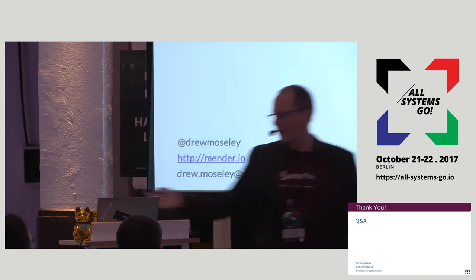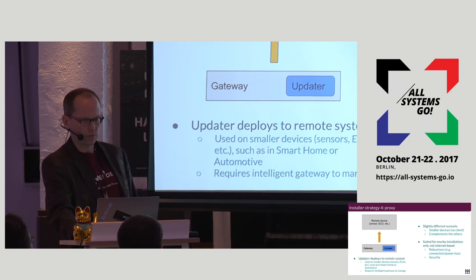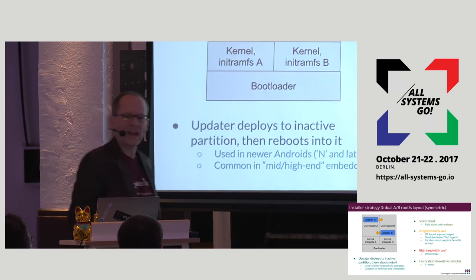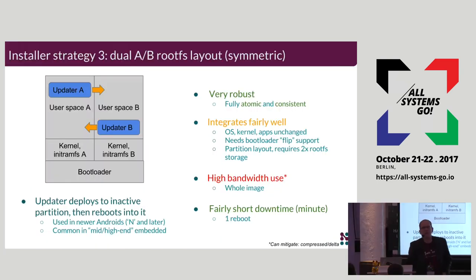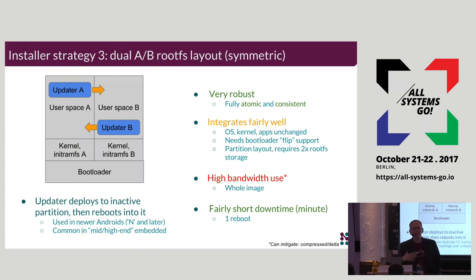The question is about the asterisk next to the high bandwidth use on the slide — can that be mitigated with things like delta updates? And absolutely it can. That's a feature we are working on in our project specifically. Everybody we talk to, that's one of the first questions they ask, so we definitely want that feature out quickly. Leonard has given a talk on CA sync, which is one of the options we're considering. There are quite a few options out there and it's kind of tricky to get right.